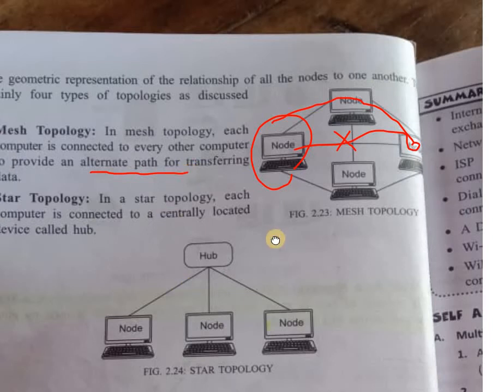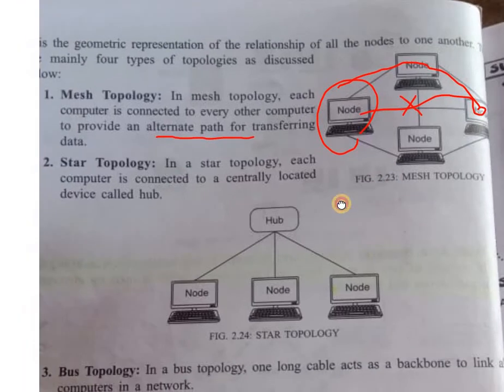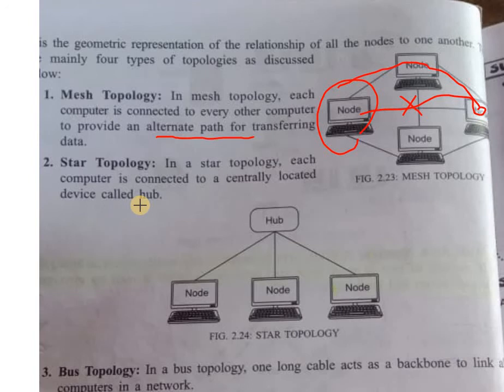The next topology is Star Topology. In star topology, each computer is connected to a centrally located device called a hub. As you know, a hub is a networking device. There are two types of hub: one is a passive hub and the second one is an active hub.